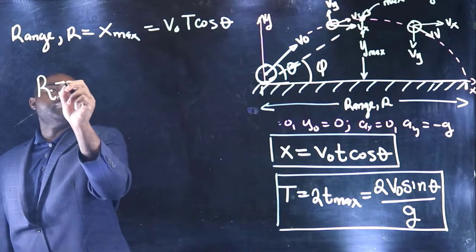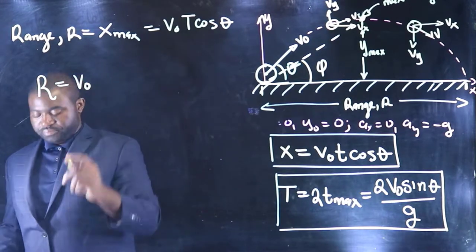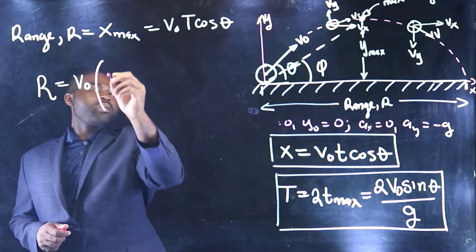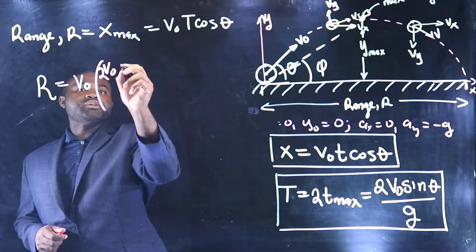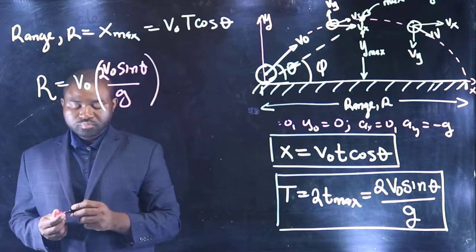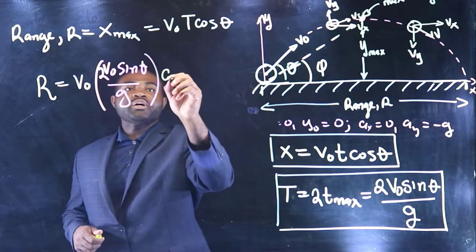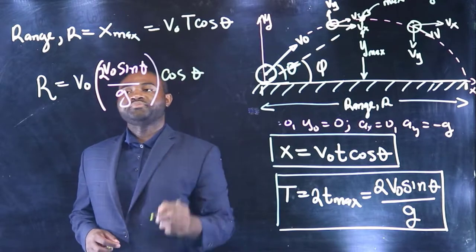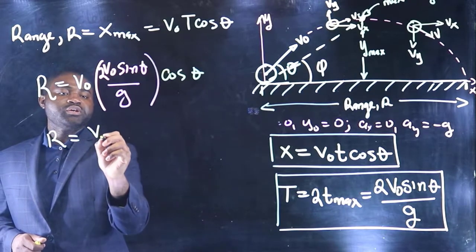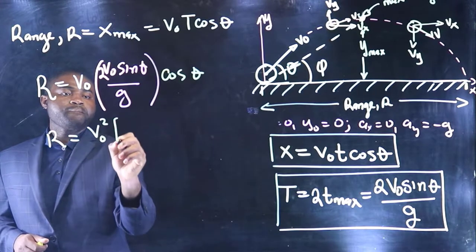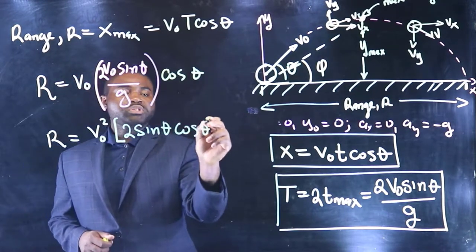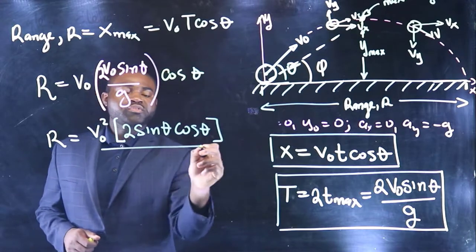Therefore, R is equal to V naught capital T, which is V naught times 2 V naught sine theta over G, multiplied by cosine theta. This can be re-expressed as V naught squared 2 sine theta cosine theta, all divided by G.